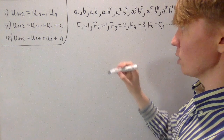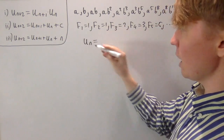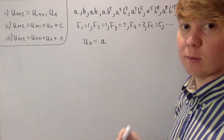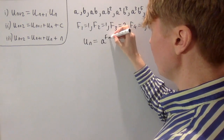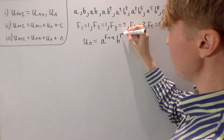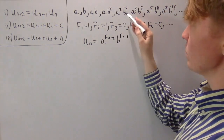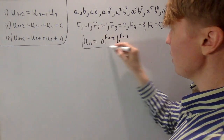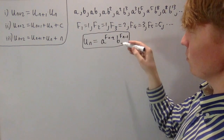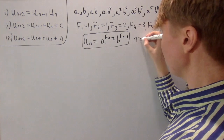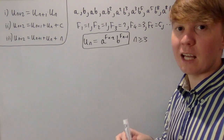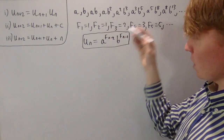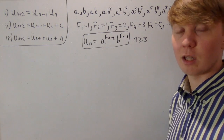We can express the nth term of this first sequence in terms of the Fibonacci numbers. We can write u_n as a to the power of f_{n-2} times b to the power of f_{n-1}, because b always has the next Fibonacci number as its power compared to the power of a. This is valid for all n greater than or equal to 3, or n equals 2 using the convention that f0 equals 0. You could now set up a proof by induction from here, which is quite straightforward.